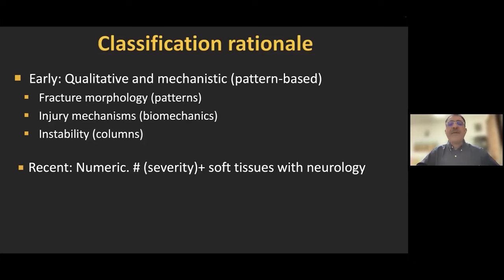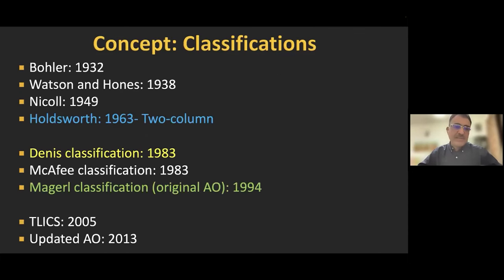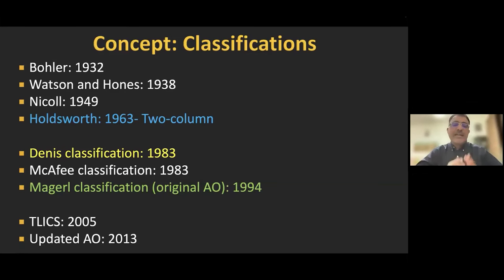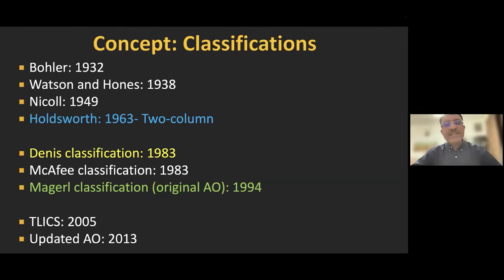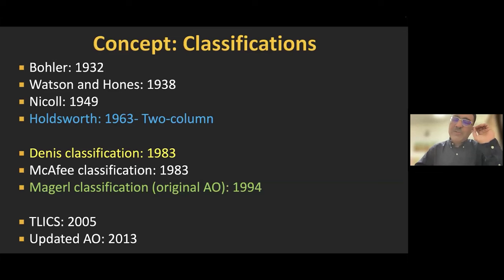Recent classification systems are more numeric, based on fracture pattern severity plus soft tissue injuries as determined on CT or MRI, along with the presence or absence of neurological symptoms. Starting from 1932 with Bowler, then Watson in 1938, Nicole in 1949 — one of the most important classifications was by Holtzworth in 1963, who described the spine as two columns. Then Dennis in 1983 introduced three-column classification; McAfee in 1983 added another; the Magerl AO classification came in 1995, updated by Vaccaro in 2005 as the TLICS classification, and then further updated as the AO-TLICS classification in 2013.